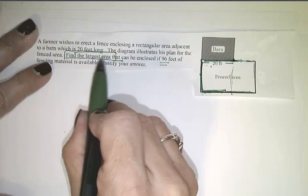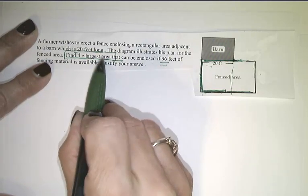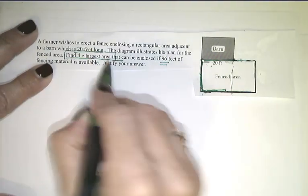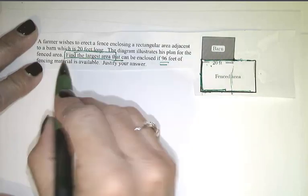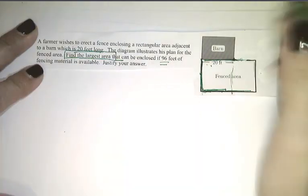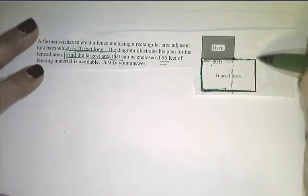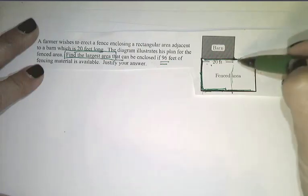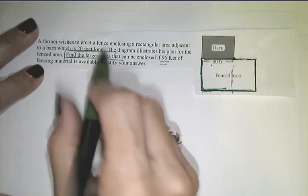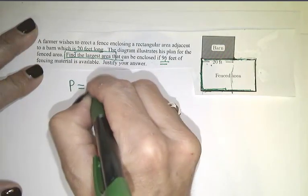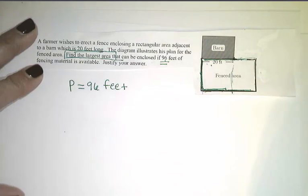Alright, so we're going to find the largest area. Now, I boxed that because that's the thing. That's the function that we're going to maximize because I want largest area. That can be enclosed if 96 feet of fencing material is available. Alright, so I need to start, before I can attack this problem, I need to start identifying what I know and I don't know. I know that whatever this area, however, whatever size this area is, the perimeter will use up all 96 feet of fencing material. So I know the perimeter is 96 feet. So I'm going to list what it is I know.